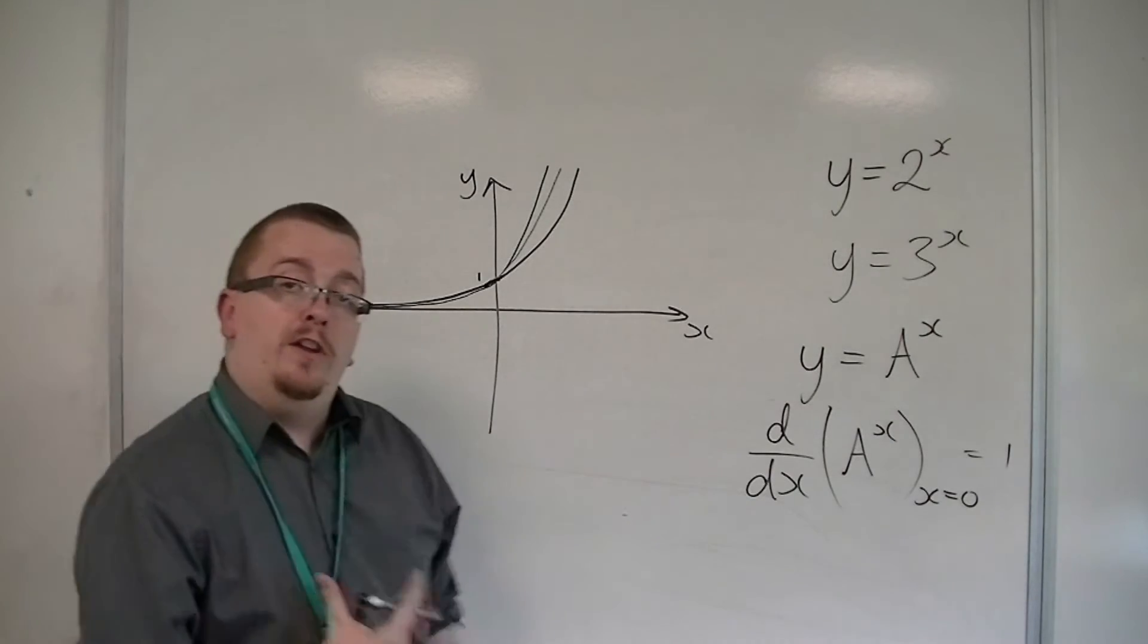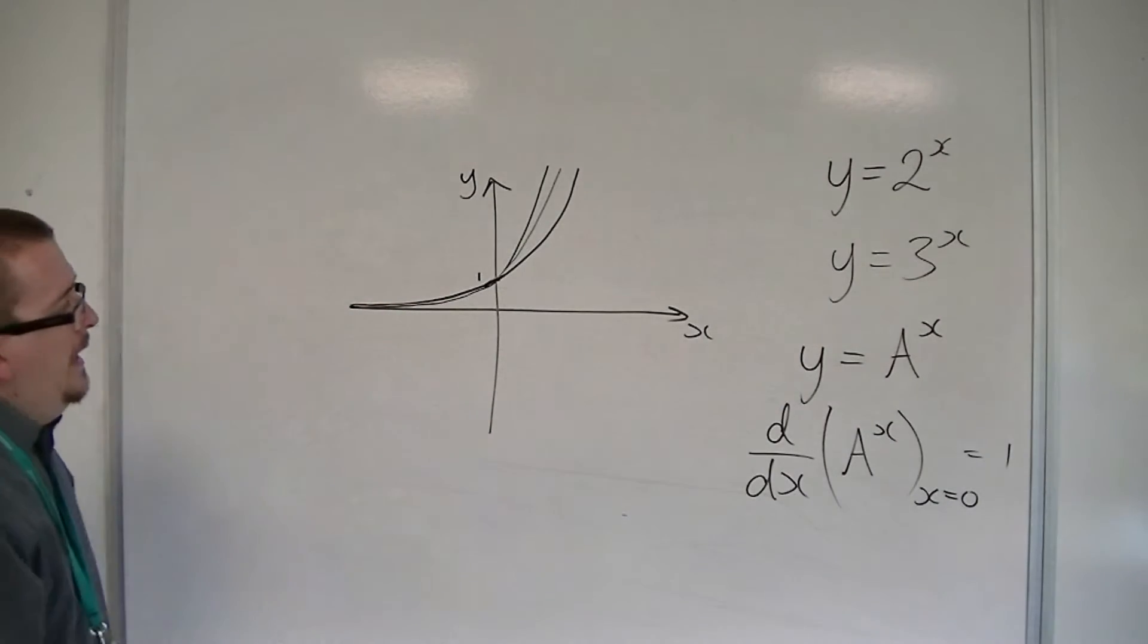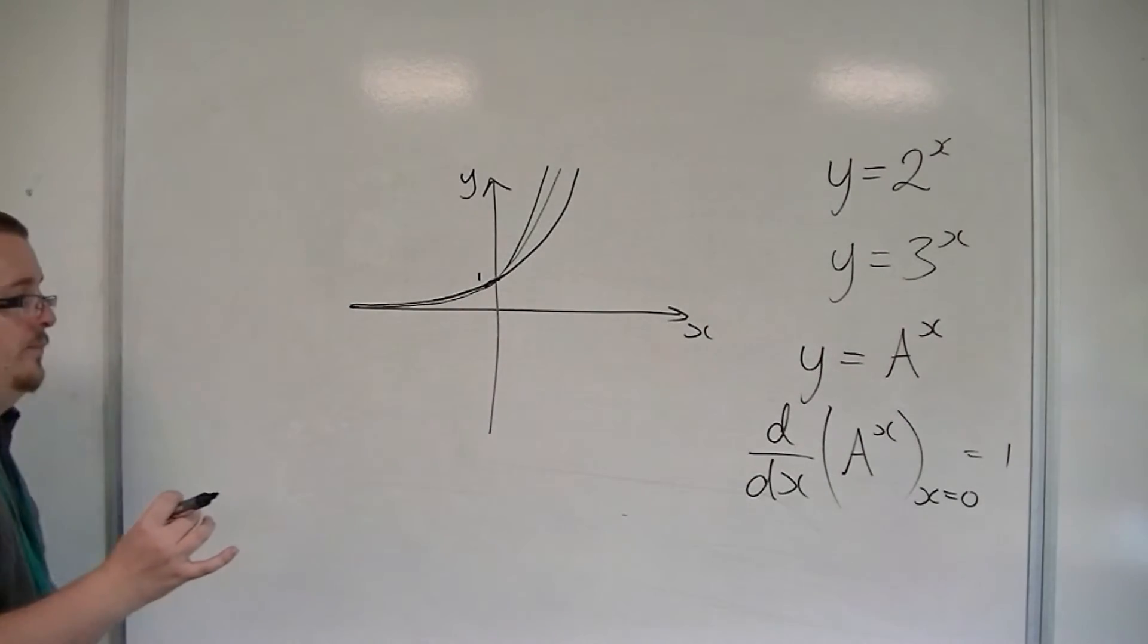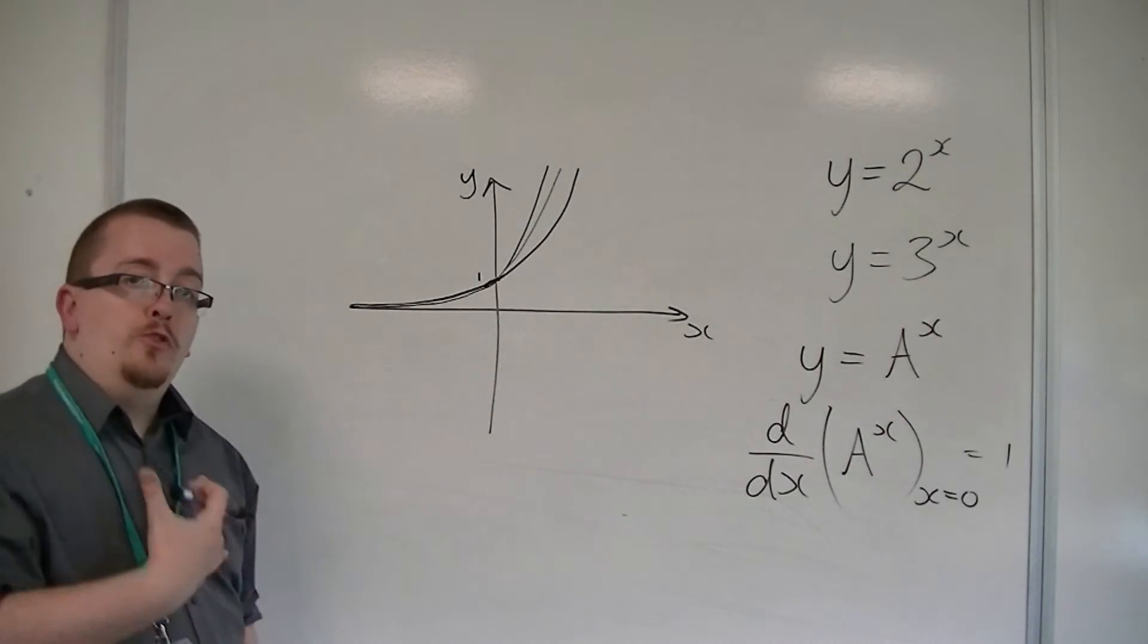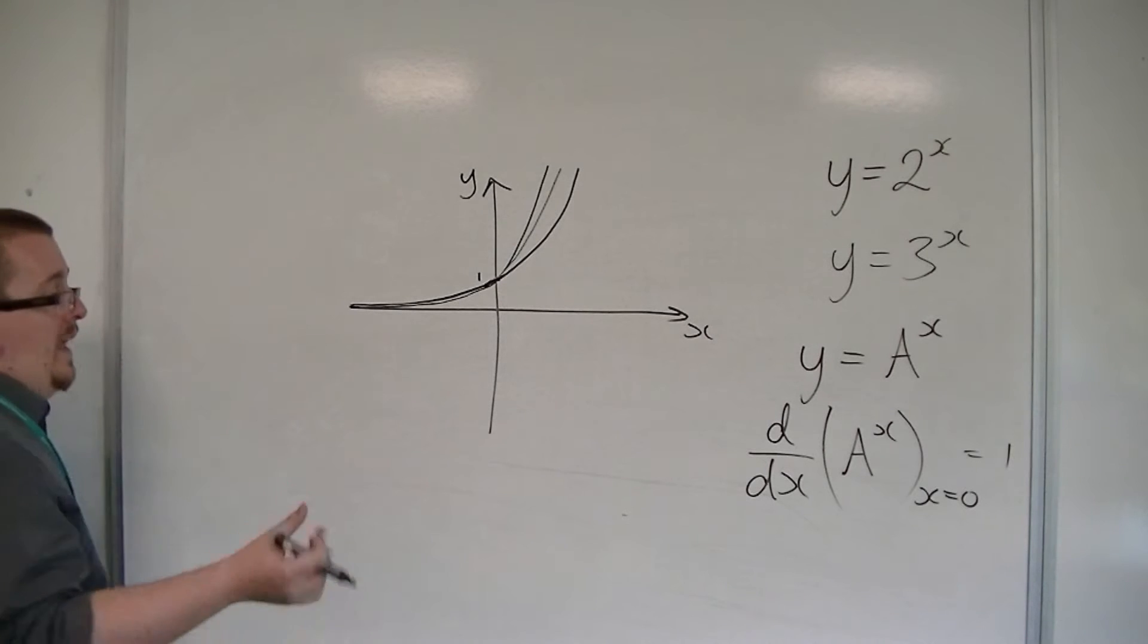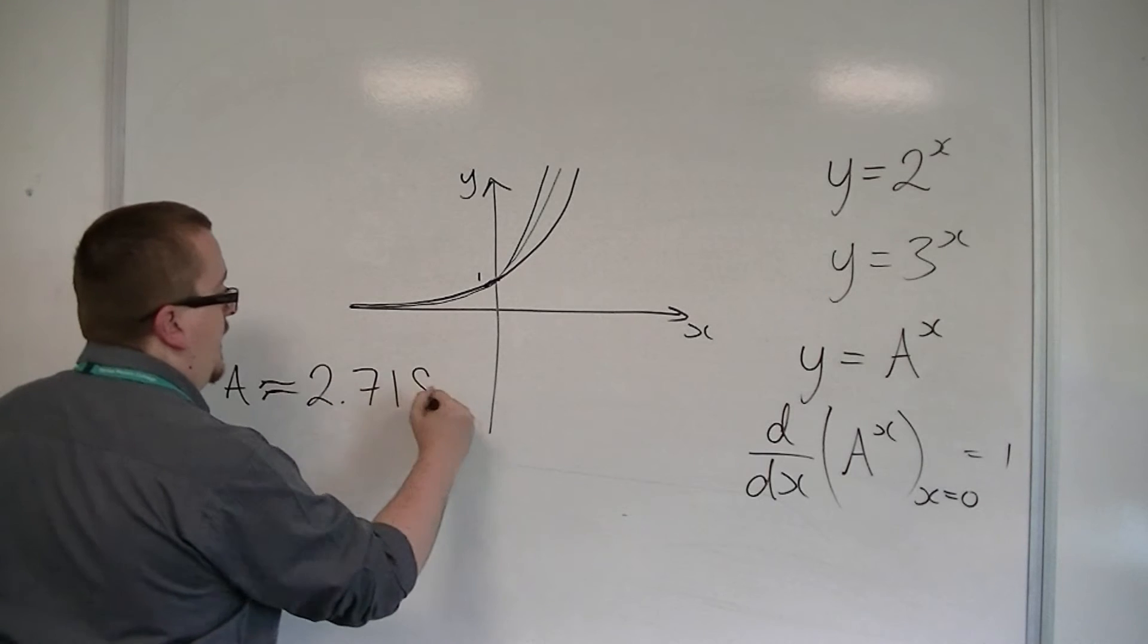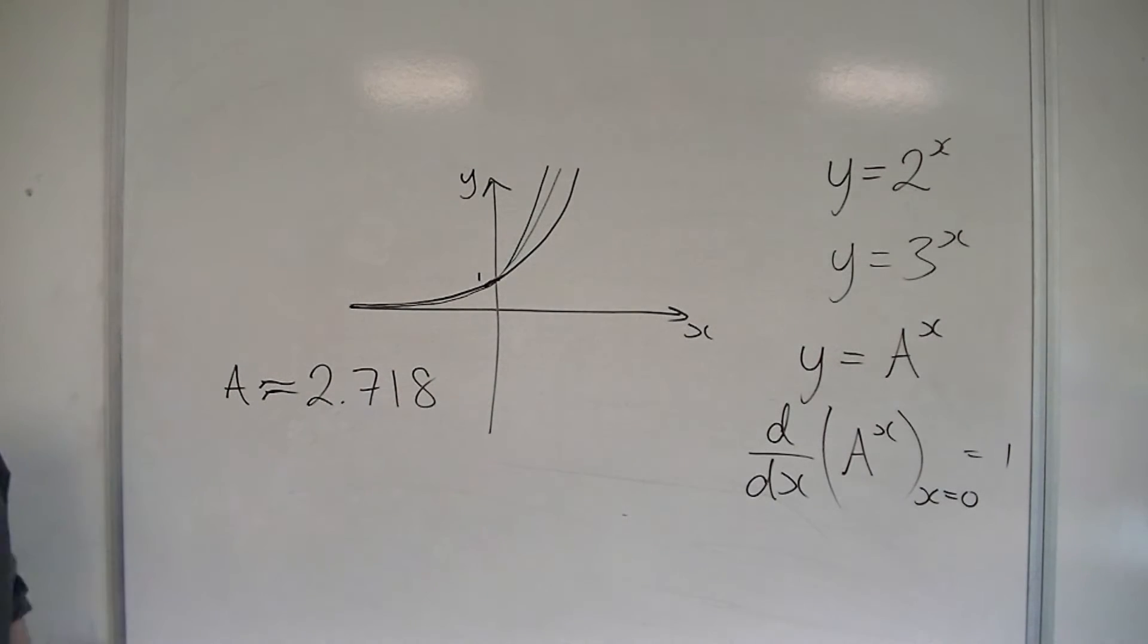That's what we're looking at here. And that number for a, where this occurs, has a very special value. In fact, it has a value of approximately 2.718 to three decimal places.